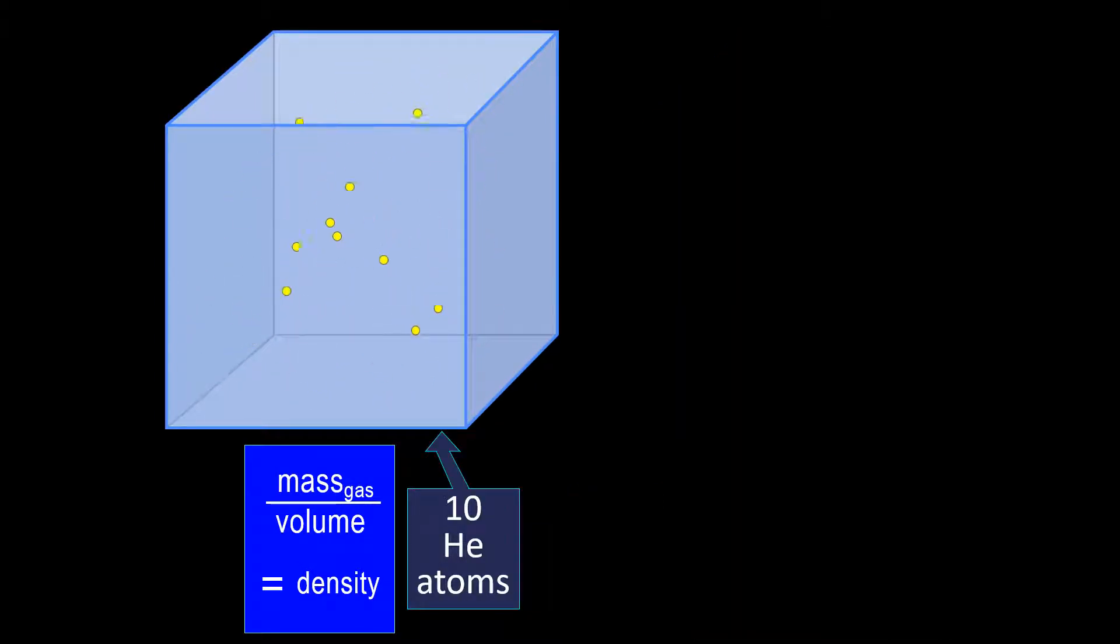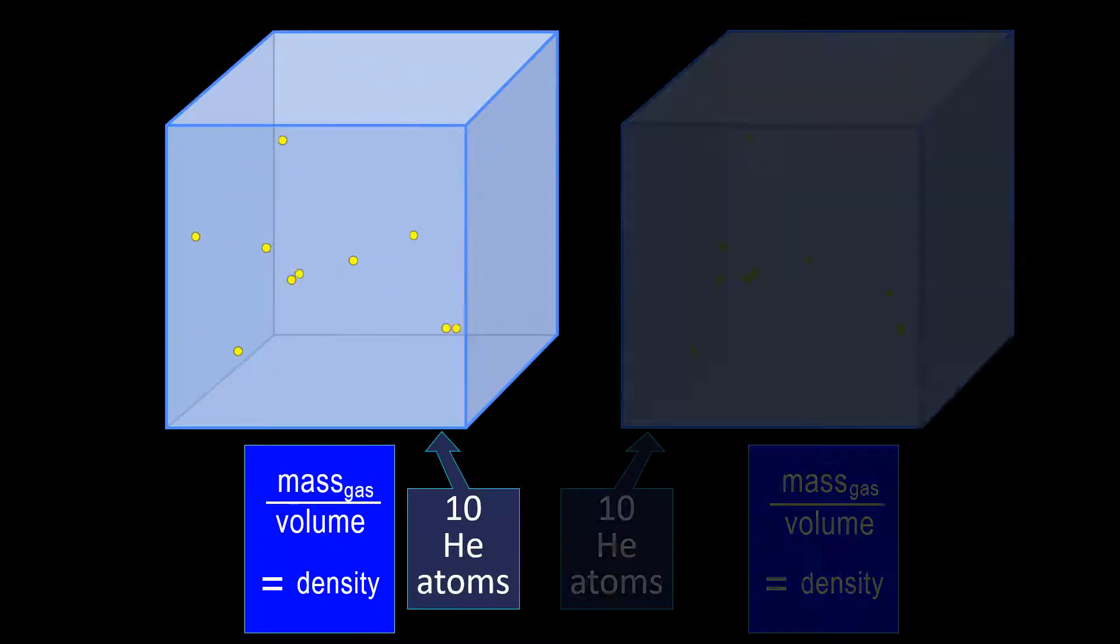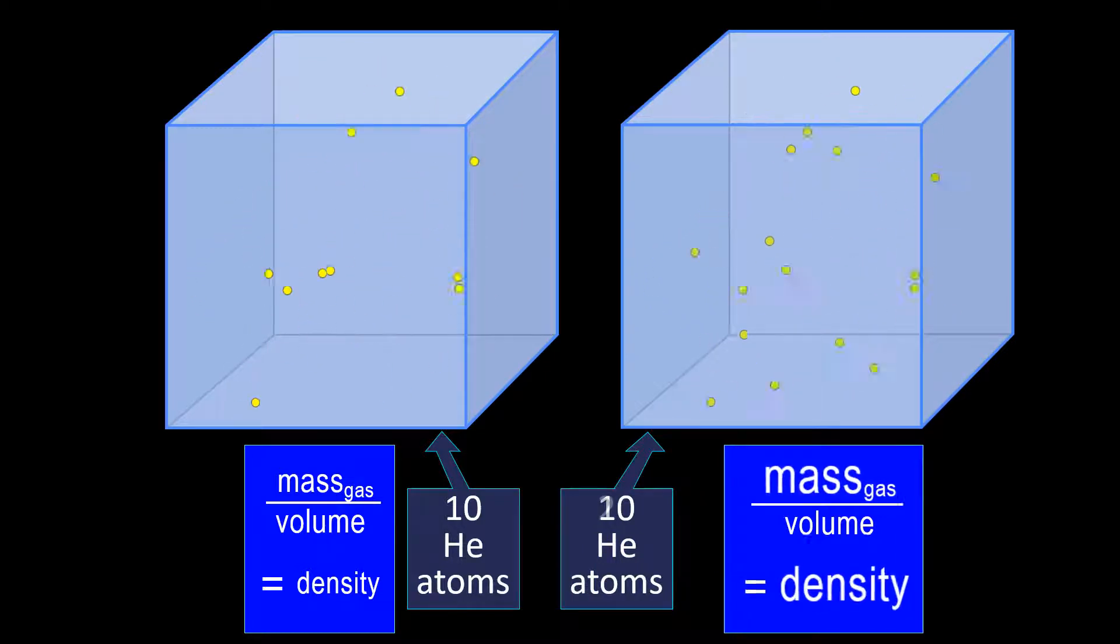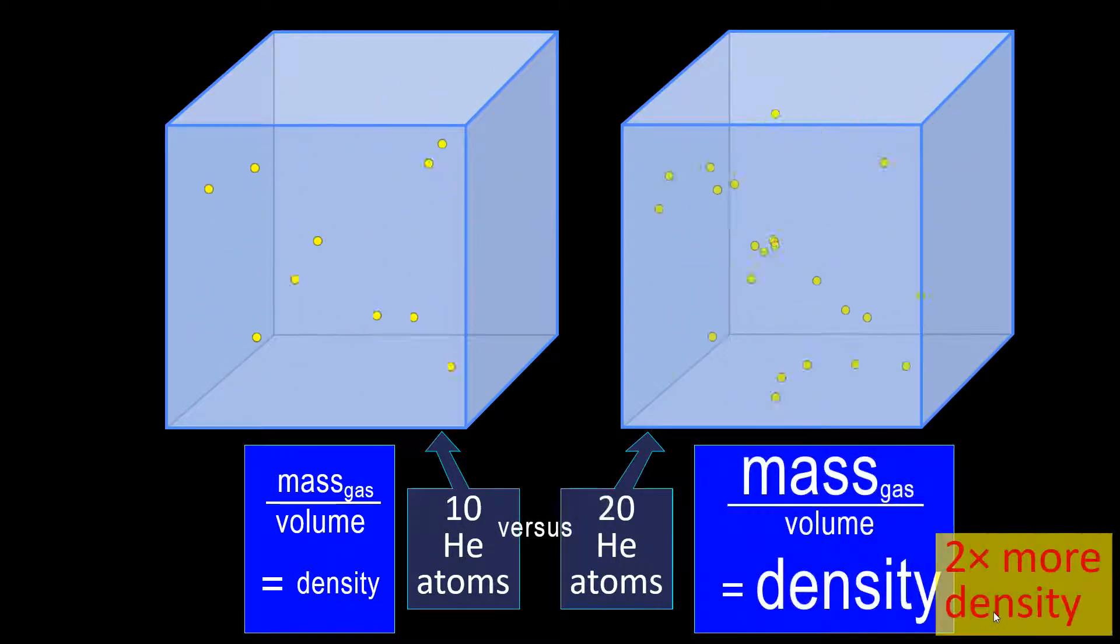Let's go back to our 10 atoms of helium. What would happen if we increased the amount of helium atoms but keep the volume constant? Our example here of 20 atoms versus 10 means the second mass is twice the first mass, and so the density is doubled as well, assuming the same volume for each.